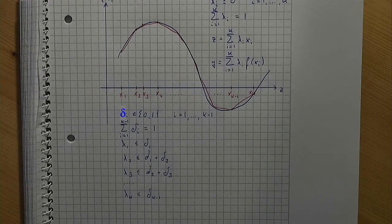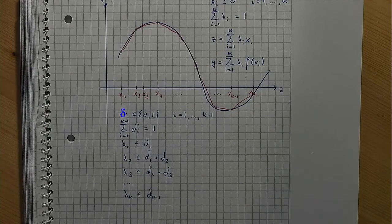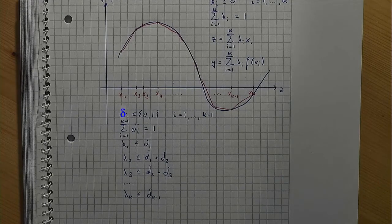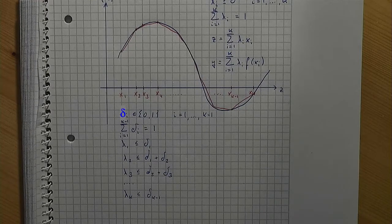It is interesting to note that under certain circumstances the use of the delta variables can be omitted. This is in particular true if the nonlinear function to be approximated defines the objective function — if that function is to be maximized and the slopes of the linear segments are monotonically decreasing from left to right, or if the function is to be minimized and the slopes of the linear segments are monotonically increasing, then the delta variables and the related constraints are not needed.